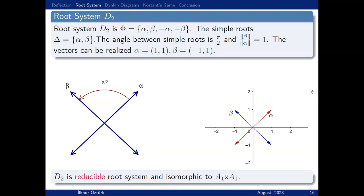This is D2. So far, I've talked about irreducible systems, but now we have a reducible one. D2 has vectors alpha, minus alpha, beta, and minus beta. It looks like there are two A1. The first A1 is alpha and minus alpha. The second A1 is beta and minus beta. So we say D2 is reducible, and equals A1 cross A1. In that case, the angle between them is π/2, and they have the same length. Similarly, you can realize this in R².